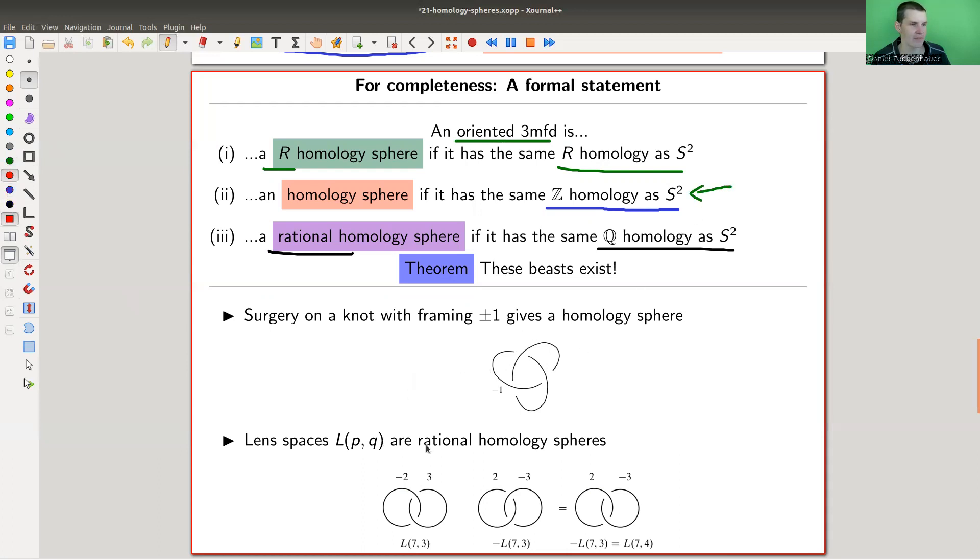But for example, all the lens spaces, they are rational homology spheres, and there you can create them by surgery, essentially around Hopf links, just certain labeled Hopf links. And this is really not so bad. So a lot of those pictures actually already give things that are homology spheres, and you have a lot of them. So it's kind of a bit of a surprising result.